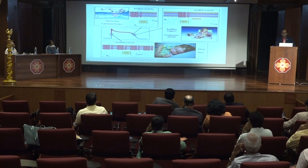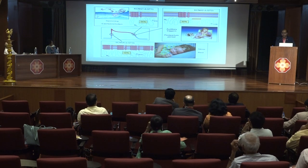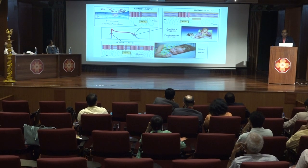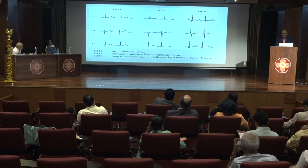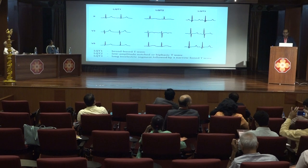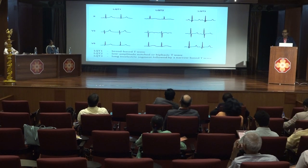There are three main types of long QT syndrome: LQT1, LQT2, and LQT3. All have different arrhythmogenic triggers and characteristic T wave morphology. Sudden cardiac death in LQT1 occurs during swimming or exertion or emotional stress. In LQT2 it occurs during the postpartum period or from a sudden auditory trigger like an alarm or loud telephone ring. LQT3 patients may die suddenly during sleep or at rest. The T wave is typically broad-based in LQT1, low amplitude or notched or biphasic in LQT2, while LQT3 shows a long isoelectric segment followed by a narrow-based T wave.